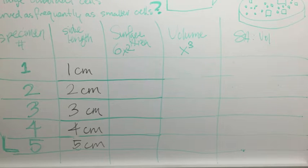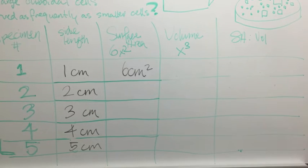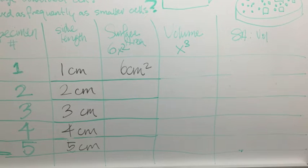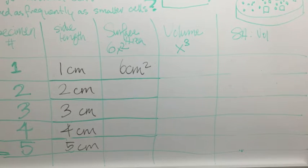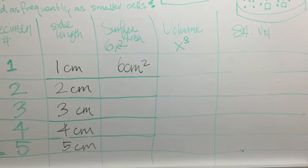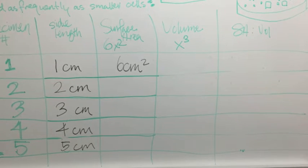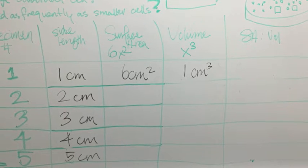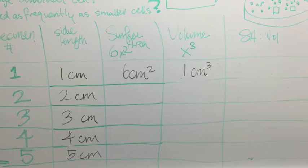So for specimen one, we calculate that, yes, that's right, it's 6 centimeters squared. And for the volume of a cube, we can simply use x³, where x again is equal to the side length. This means that we observed one centimeter cubed for specimen one.